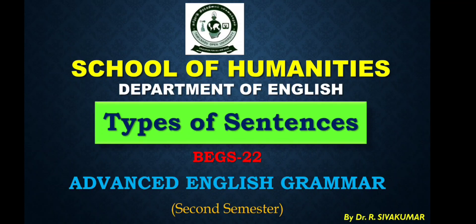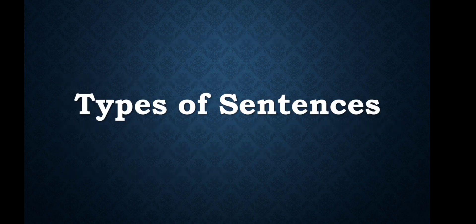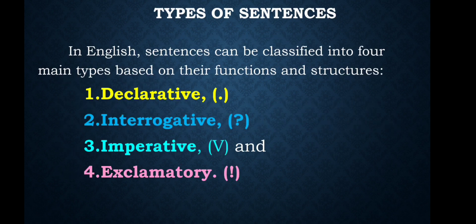Types of Sentences. In English, sentences can be classified into 4 main types based on their functions and structures. They are: 1. Declarative Sentence, 2. Interrogative Sentence, 3. Imperative Sentence, and 4. Exclamatory Sentence.